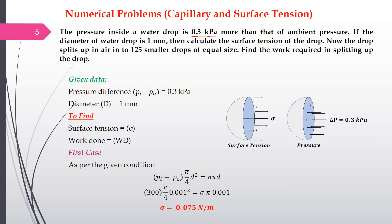The given data: pi − po = 0.03 kPa = 300 Pascals, and diameter D = 1 mm = 0.001 m. First we find the surface tension; second, we find the work done. The first case uses the condition of equilibrium for a liquid droplet.